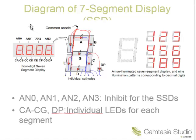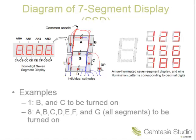We see that there are four seven segment displays, labeled AN0 through AN3. Each of the segments on each seven segment display are labeled CA through CG. If we take a look at what we might want to turn on, look at the right-hand side of the screen. We see that for a one, we would turn on segments B and C. For a two, we would turn on A, B, D, E, and G, and so forth. For eight, we would have all seven segments turned on.